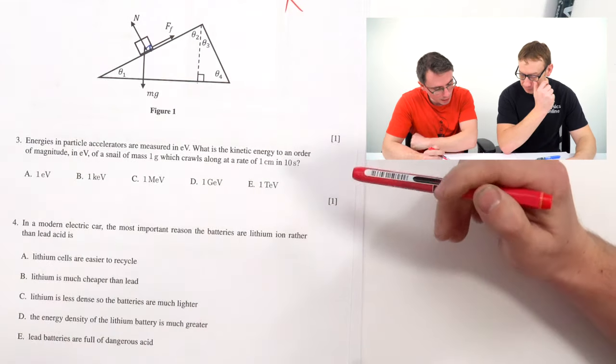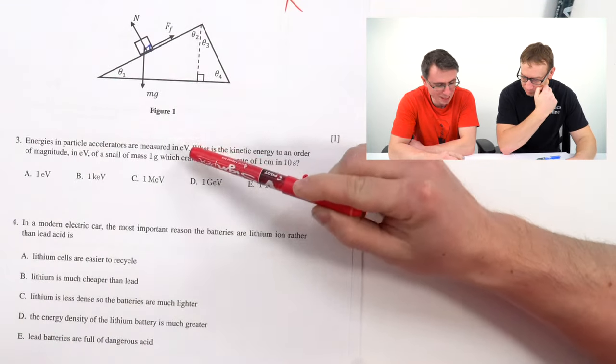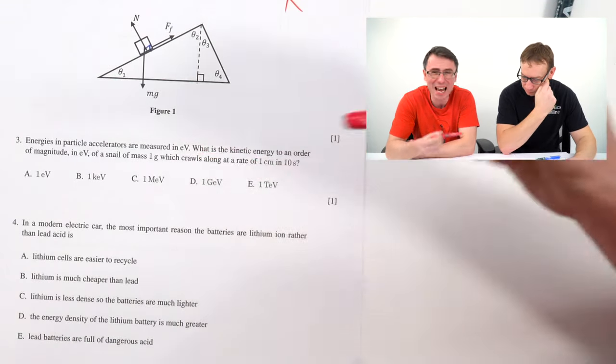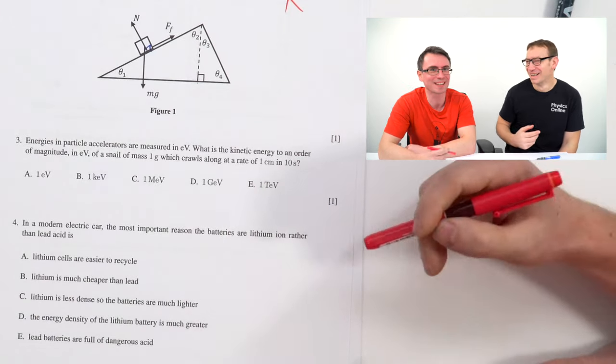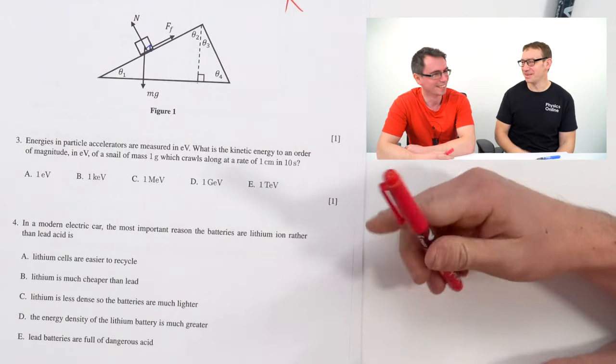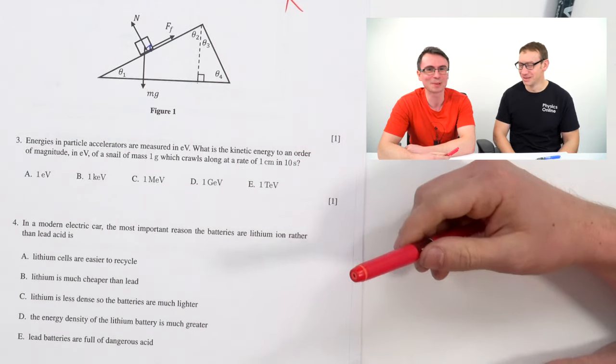In the next question we're going to have a look at an electron volt and a snail. Question number three. Energies in particle accelerators are measured in electron volts — in the Large Hadron Collider they've reached tera electron volts, which is a fraction of a joule. When you say it in electron volts it sounds more impressive.